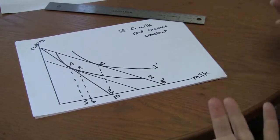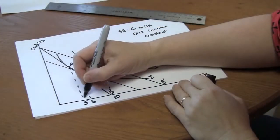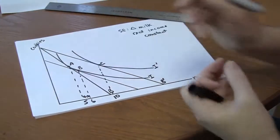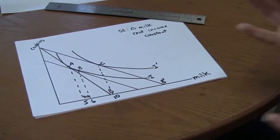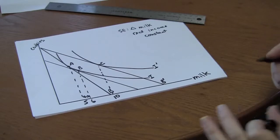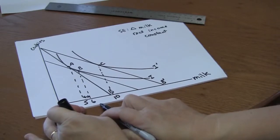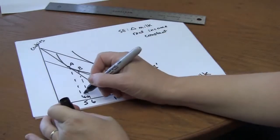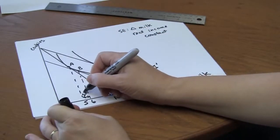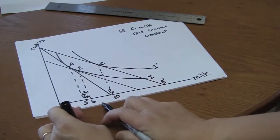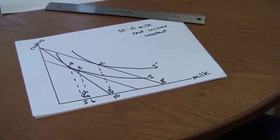What that tells us is that the effect of the change in relative prices holding income constant is to increase milk consumption by one cup. That's the substitution effect. The movement from five to six glasses of milk.